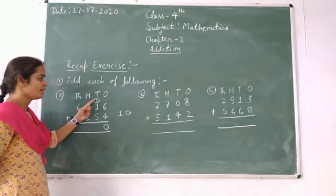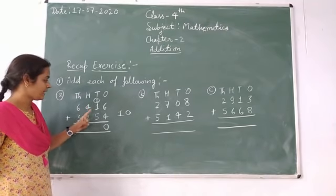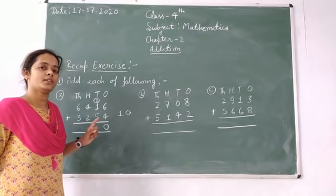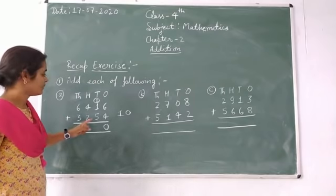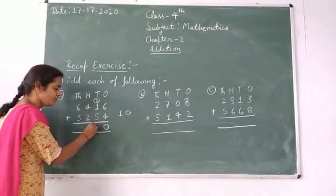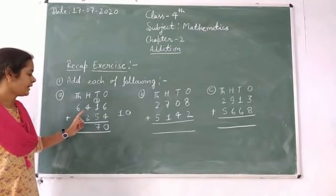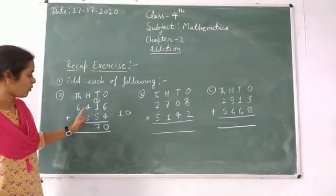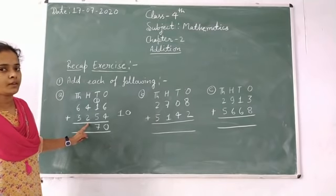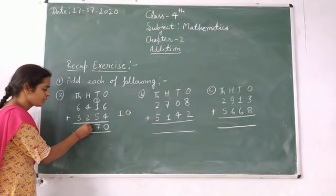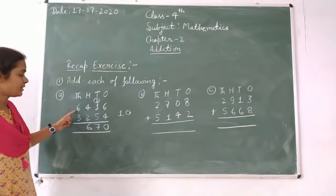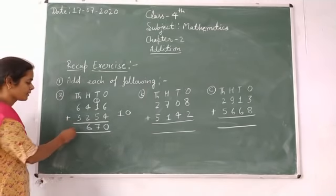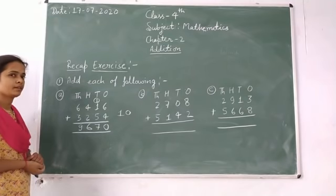Next: one plus one — we get two. Then two plus five — five numbers forward from two — we get seven. Write seven. Next: four plus two — two numbers forward from four — we get six. Next: six plus three — three numbers forward from six — we get nine.